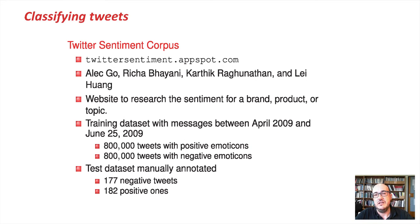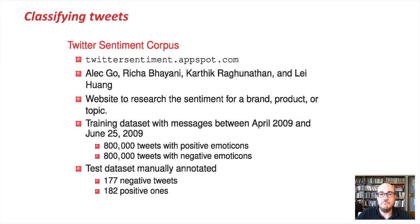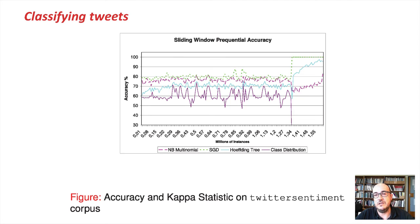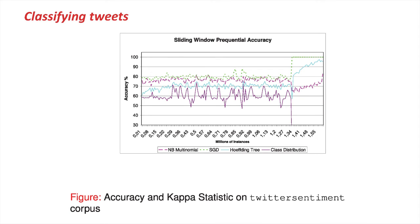Now, let's look at an application. There is this Twitter sentiment corpus made by students at Stanford, containing tweets collected between April 2009 and June 2009, with 800,000 tweets with positive emoticons and 800,000 tweets with negative emoticons. If we do a frequency evaluation using these tweets and apply a Naive Bayes multinomial classifier, a stochastic gradient descent classifier, and a Hoeffding tree, we can compare their performance.